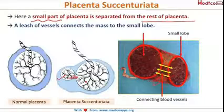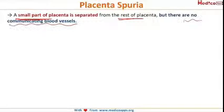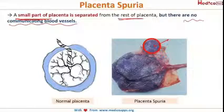Similar to placenta succenturiata, we have another type called placenta spuria. In this also, a small part of the placenta is separated from the rest of the placenta, but the difference is that there are no communicating blood vessels. As we can see in this diagram, in placenta spuria a small lobe of the placenta is separated from the main mass with no connecting vessels.